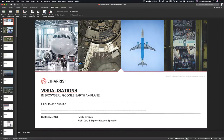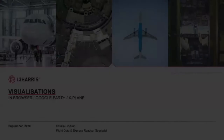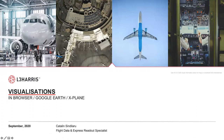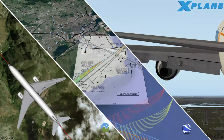My name is Katalin Shingelaru, I work as a slide data specialist for L3 Harris. One of my tasks is to support visualization inquiries. We offer various solutions for visualizing a flight depending on the situation — three in total: an in-browser visualization, a Google Earth module, and X-Plane. I'll go through the advantages of each of those packages.